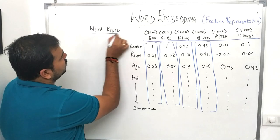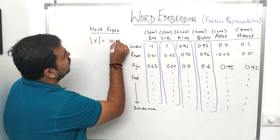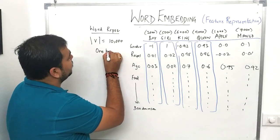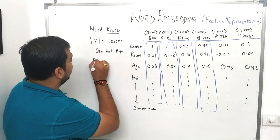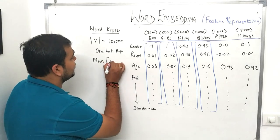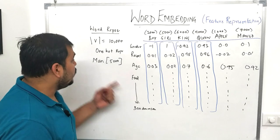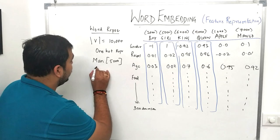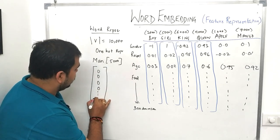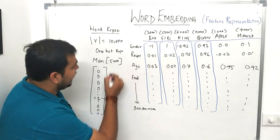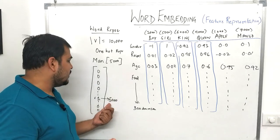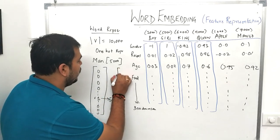Suppose I have a dictionary with 10,000 words. In bag of words, this can also be called one-hot representation. Suppose I take the word 'man' and it is present at the 5,000th location in the dictionary. If I want to convert 'man' into a vector using one-hot representation, I take a 10,000-dimensional vector where all other positions are zero and only the position at index 5,000 is one. In the dictionary, all words are in sorted order with their index.